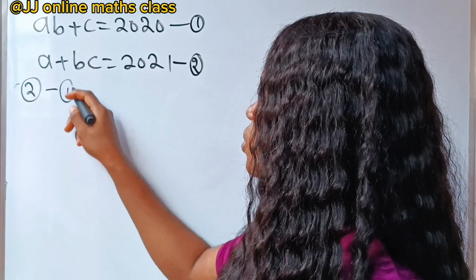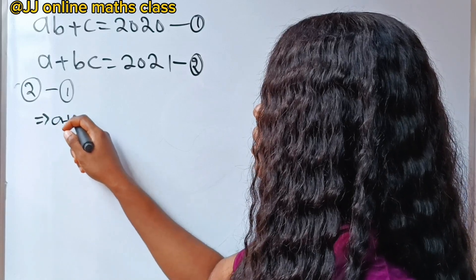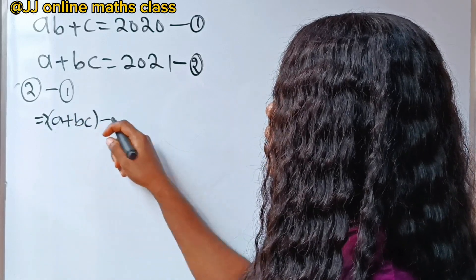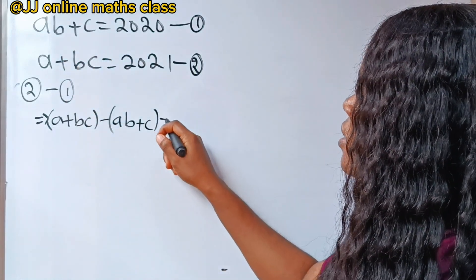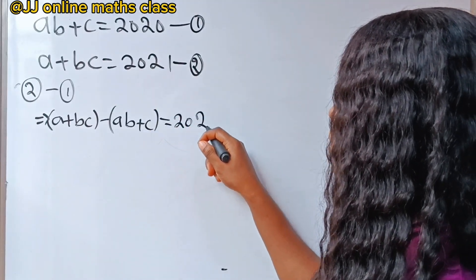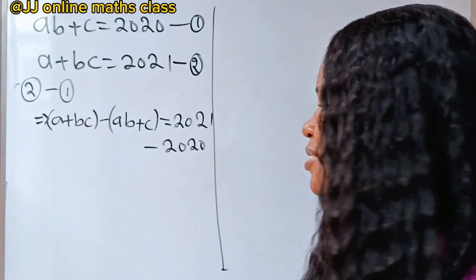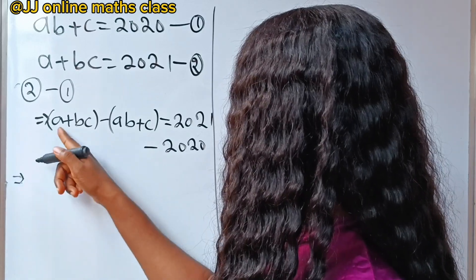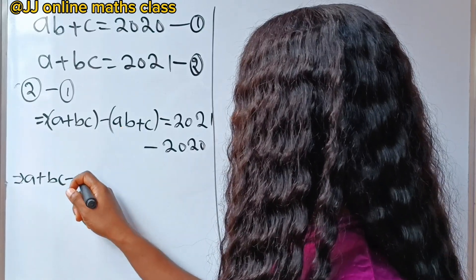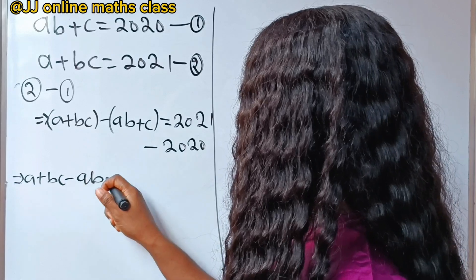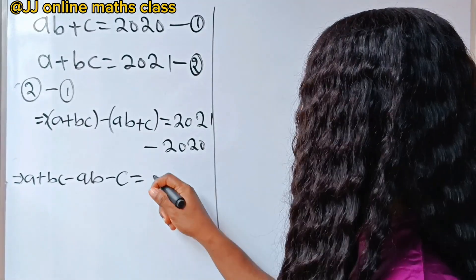So, if we say equation 2 minus equation 1, we will have A plus B times c, minus A times B plus C, is equal to 2021 minus 2020. So, we have A plus B times c, minus AB, minus C, is equal to 1.